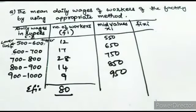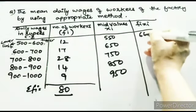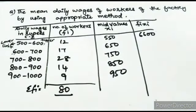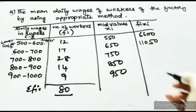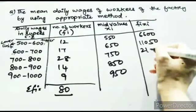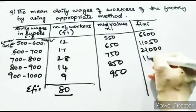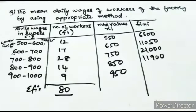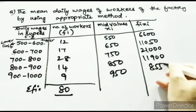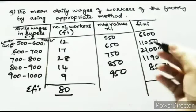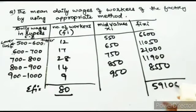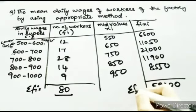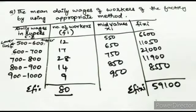12 × 550 = 6600. 17 × 650 = 11050. 28 × 750 = 21000. 14 × 850 = 11900. 9 × 950 = 8550. Adding all these: Σfi·xi = 59100.